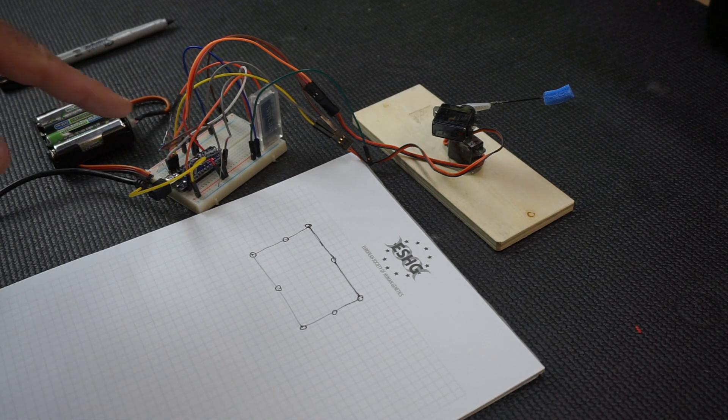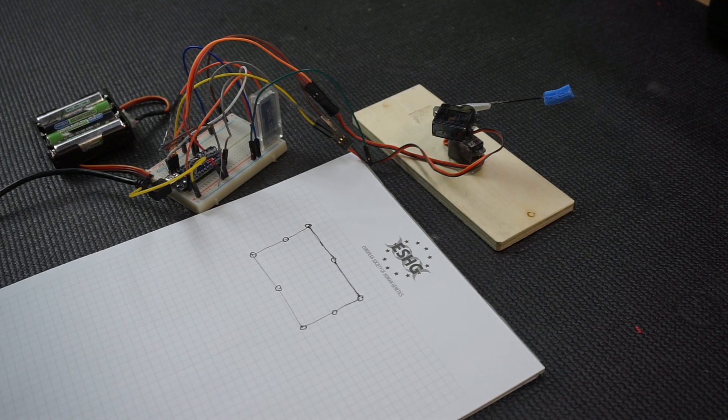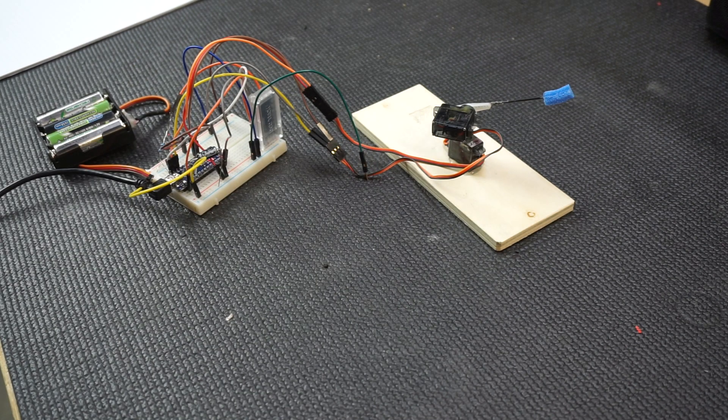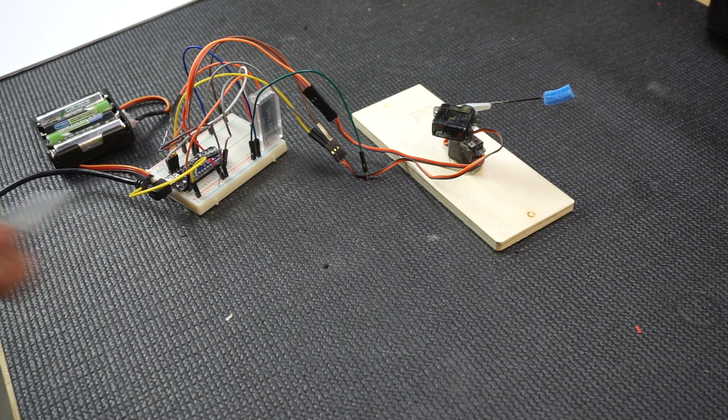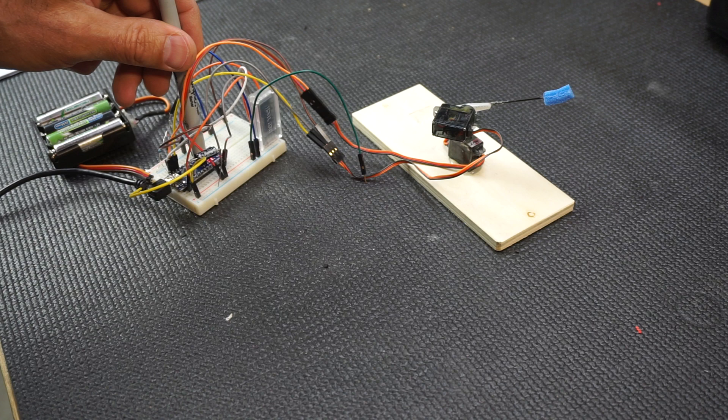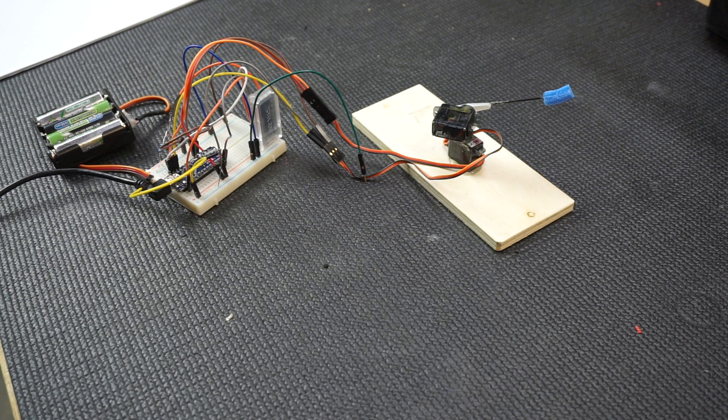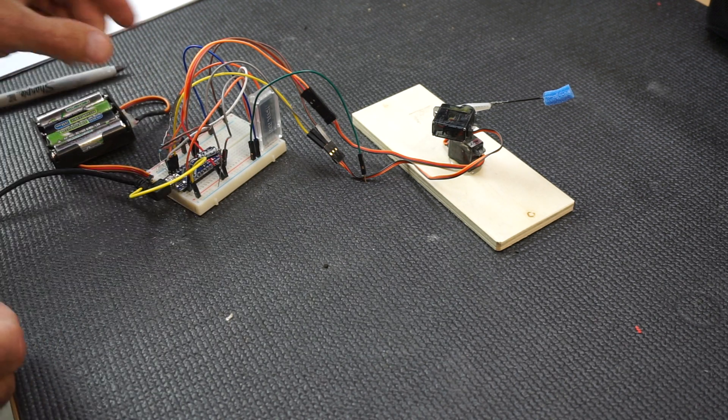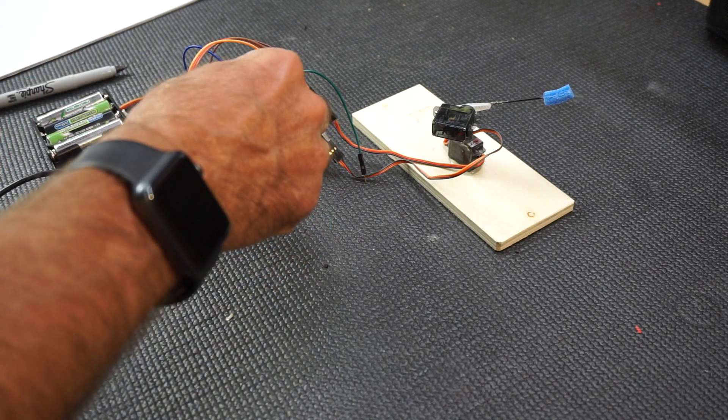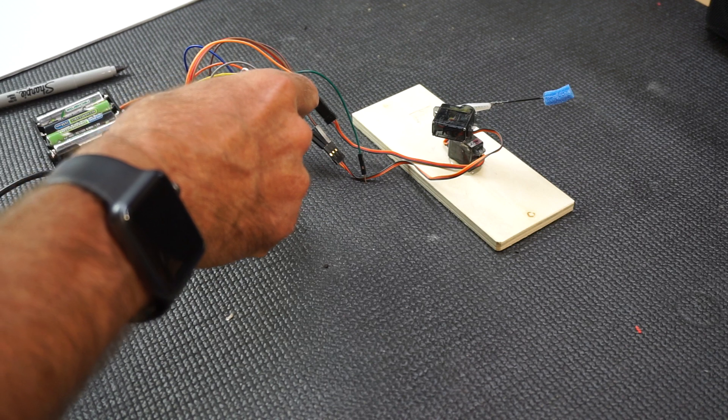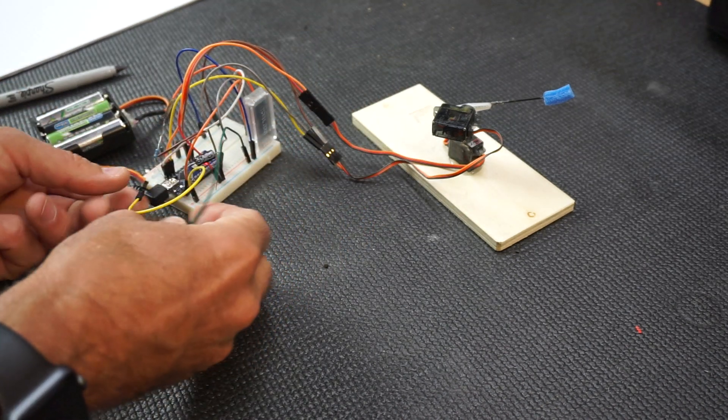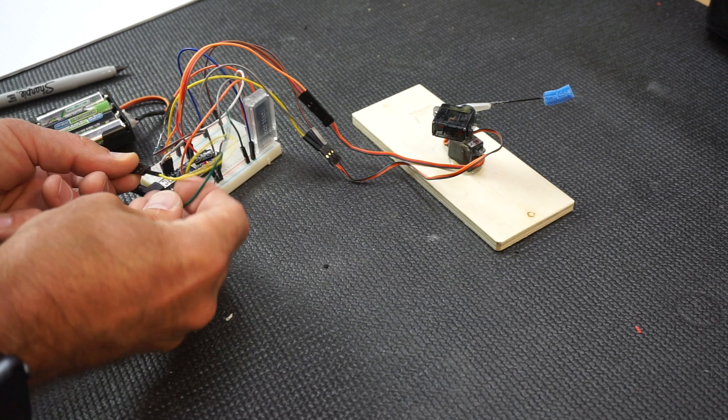First of all, you can see that the controller is running. Let me power up. Let me reset it first. Okay, now I am powering up the service. I need just to find this. Okay, I am connecting power to my service.